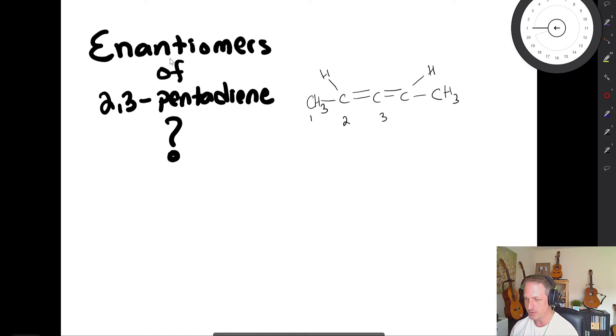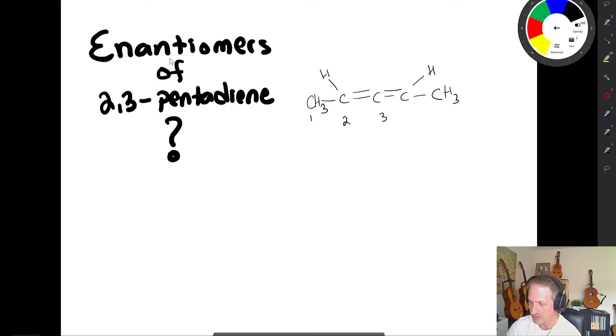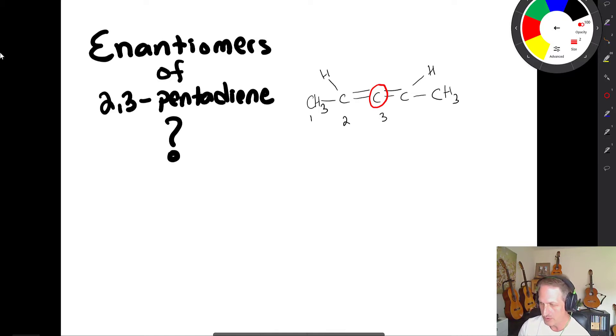So how are these enantiomers? Well, you have to look carefully here at this central carbon. And what's going on right there? So let's build this up down below. We'll start off here with our carbon atom, put a little circle around it. Now that carbon right here is sp hybridized.